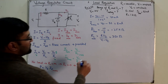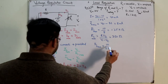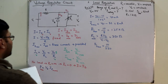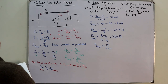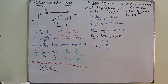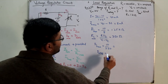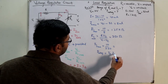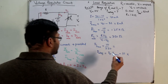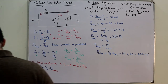With RLmin = 250 Ω, ILmax = Vout / RLmin = 10 / 250 = 40 mA. The power rating of the Zener diode is P = VZ × IZmax = 10 × 32 mA = 320 mW.